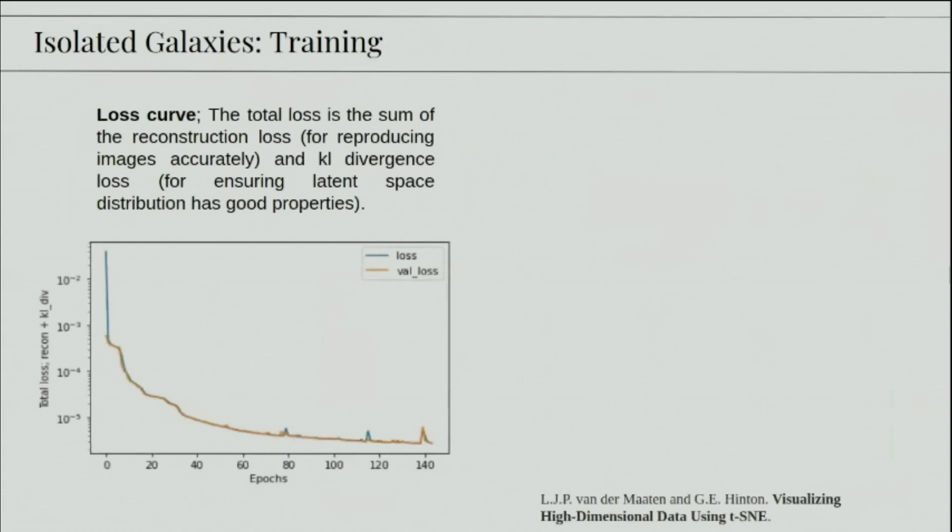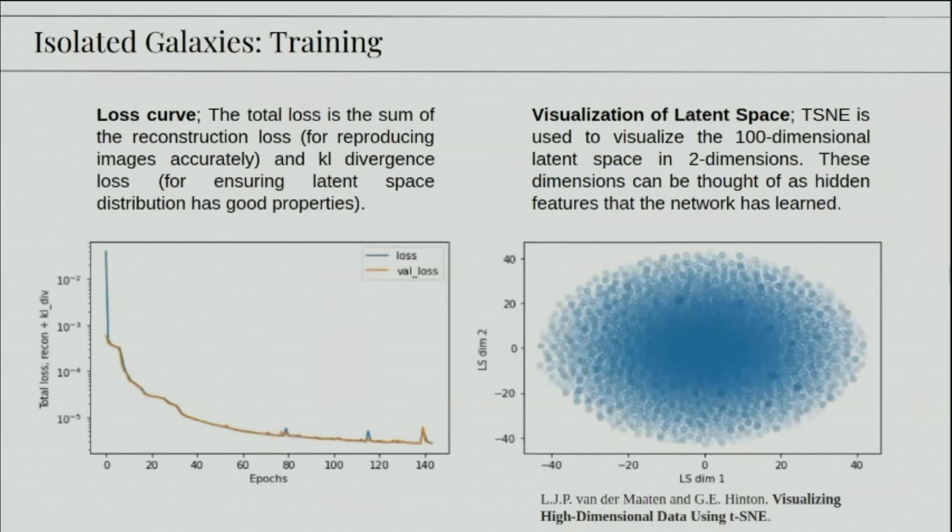Then we start training our isolated galaxies. And we can check training by looking at the loss curve, which shows the total loss of the algorithm. And this is the sum of the reconstruction loss, which indicates how well the galaxy image is being reproduced, and also the KL divergence loss, that ensures that our latent space has good properties. This is then visualized using t-SNE, which is helpful for visualizing any high dimensional data into lower dimensions. So we use t-SNE to visualize the 100 dimensional latent space in two dimensions. These dimensions can be thought of as hidden features that the network has learned.